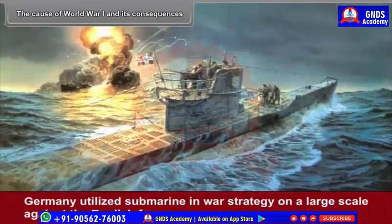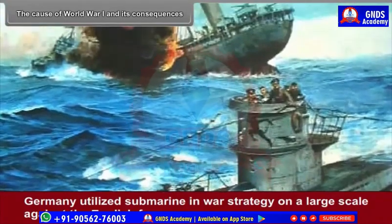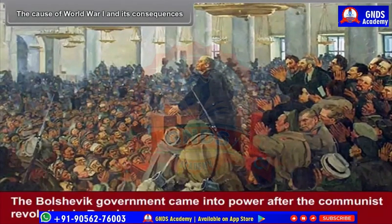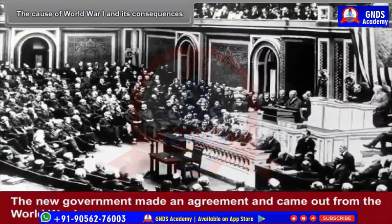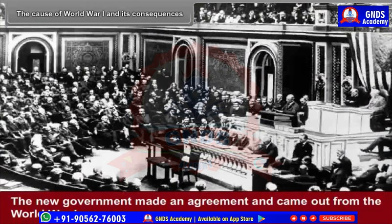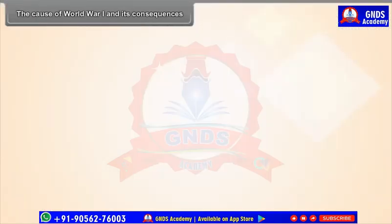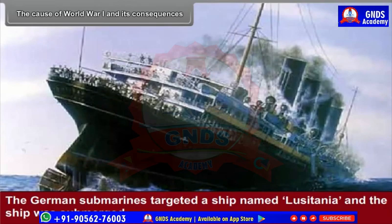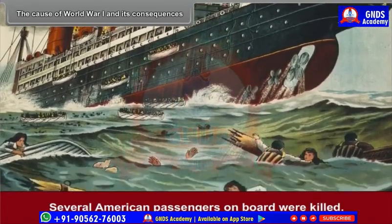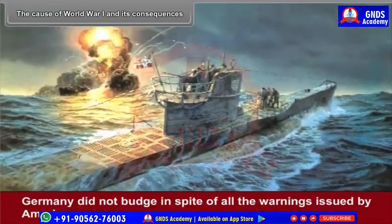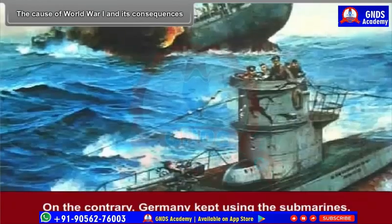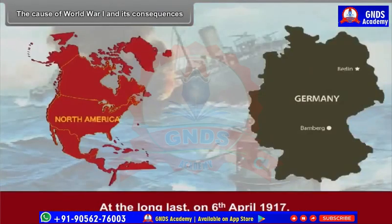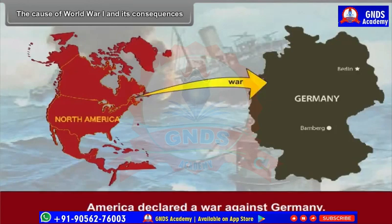Germany utilized submarines in war strategy on a large scale against the English forces. The Bolshevik government came into power after the communist revolution in Russia and made an agreement to come out from the First World War. The German submarines targeted a ship named Lusitania, which was submerged. Several American passengers on board were killed. Germany kept using the submarines despite warnings, and on 6th April 1917, America declared war against Germany.